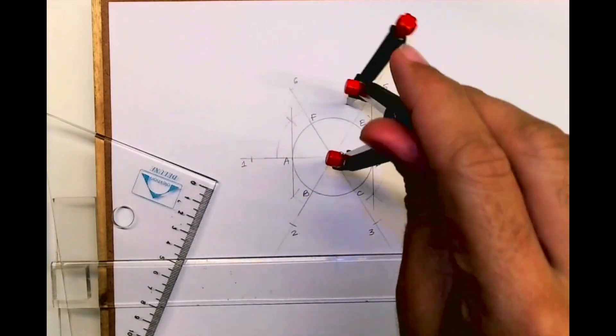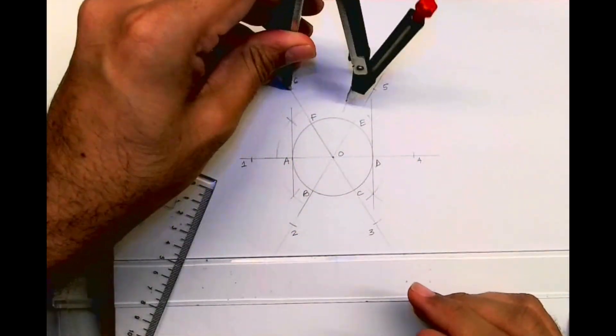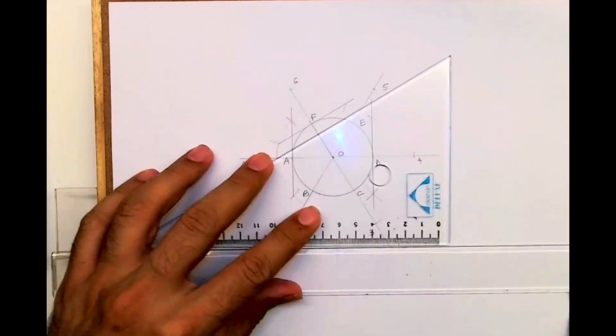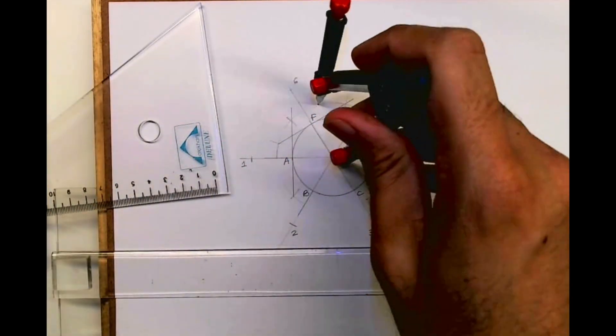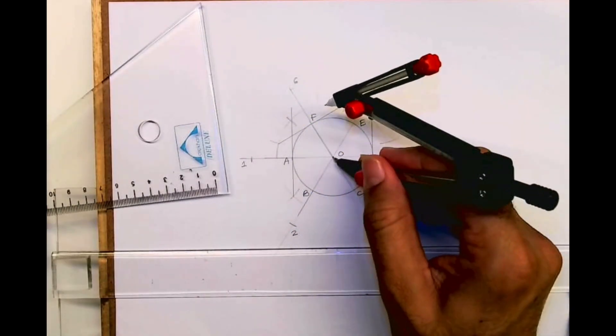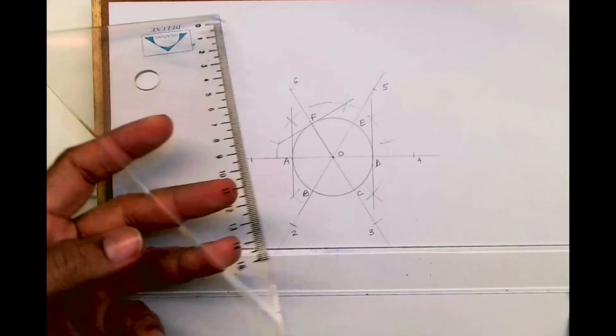Same way, bisect O-6. Same way, bisect O-5. So by doing this, what you're getting is a hexagon.